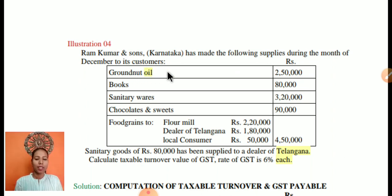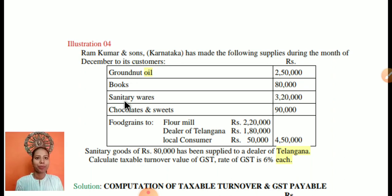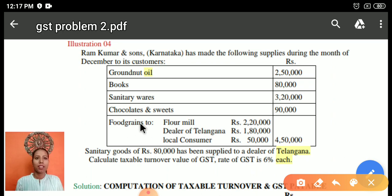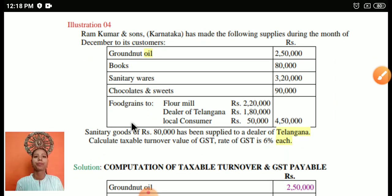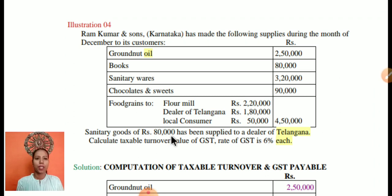Groundnut oil — groundnut supply is exempted but oil is taxable at the rate of five percent. Books, including graph books and notebooks, are exempted. Sanitary wares are taxable. Chocolates and sweets are taxable. Food grain is exempted. The food grain supply to a flour mill dealer — local taxes — is exempted, not taxable.